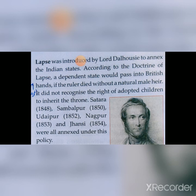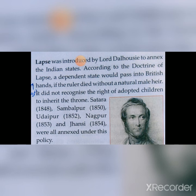According to the Doctrine of Lapse, a dependent state would pass into British hands if the ruler died without a natural male heir. So whatever dependent state was dependent on the Britishers, that state would be passed on to the Britishers if the ruler died without a natural male heir. This was the Doctrine of Lapse.